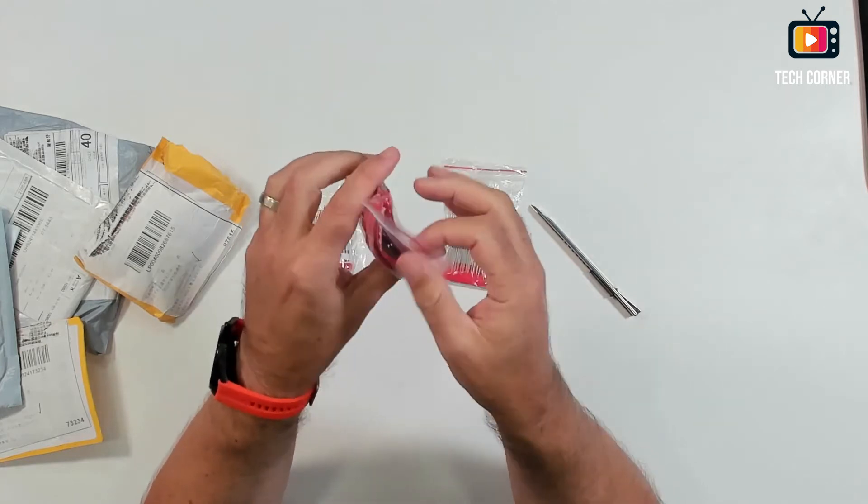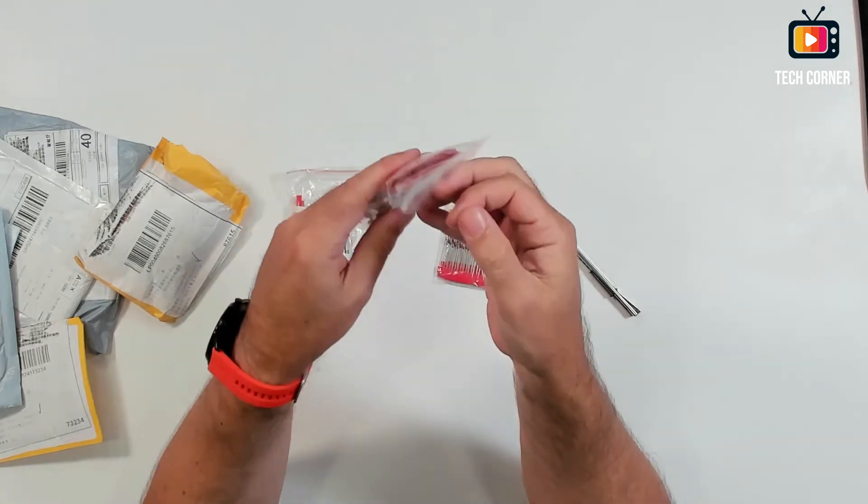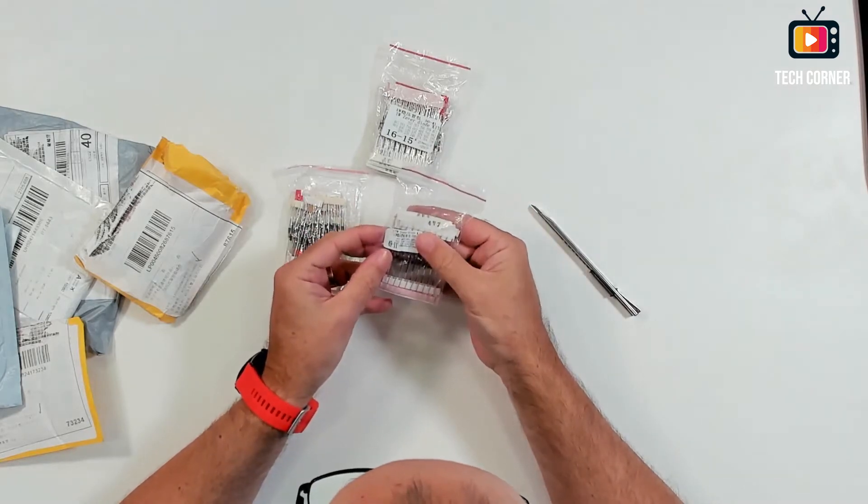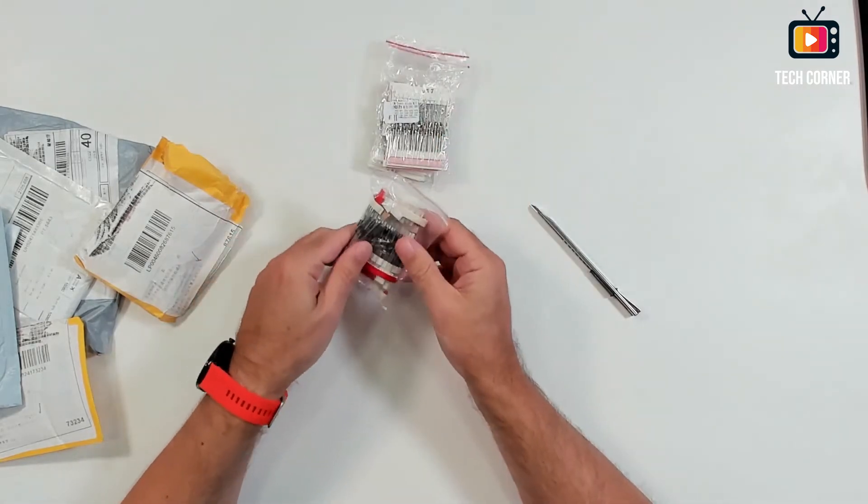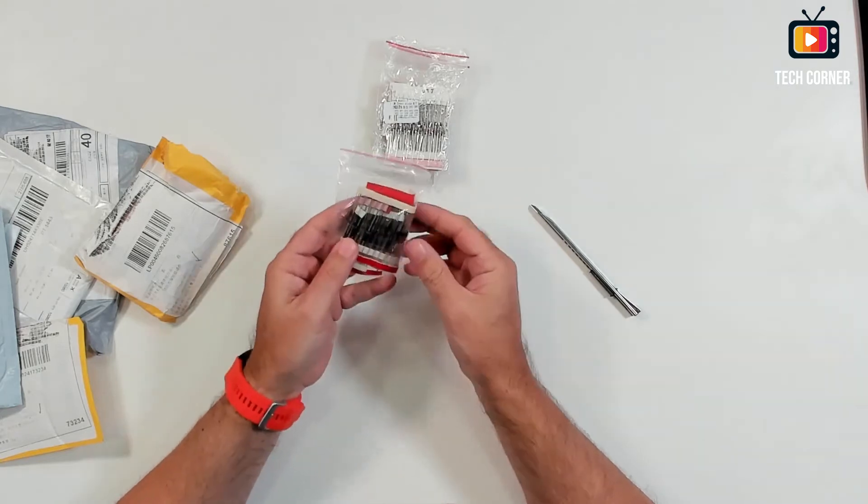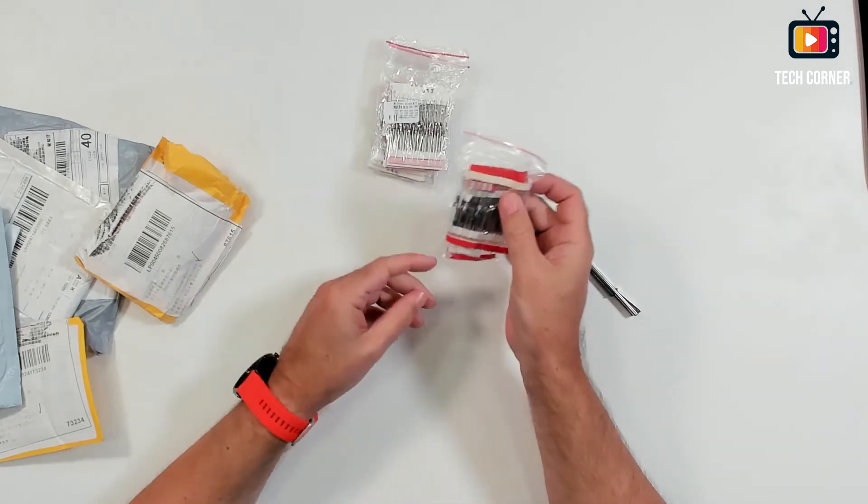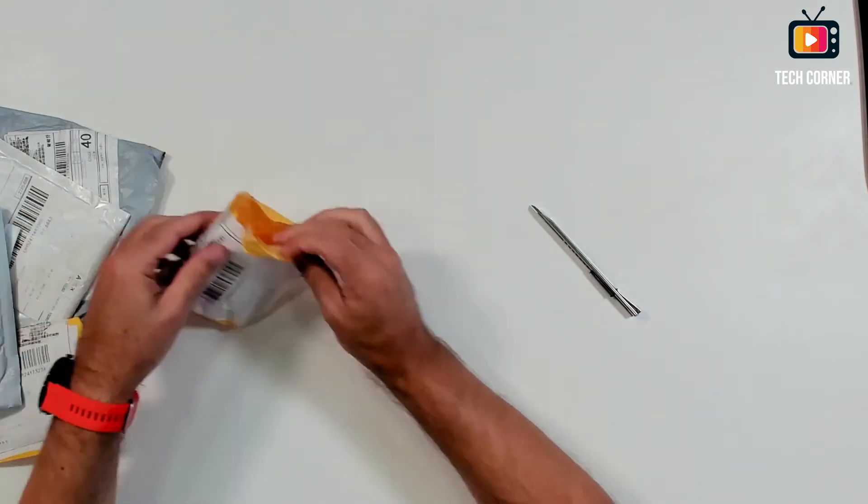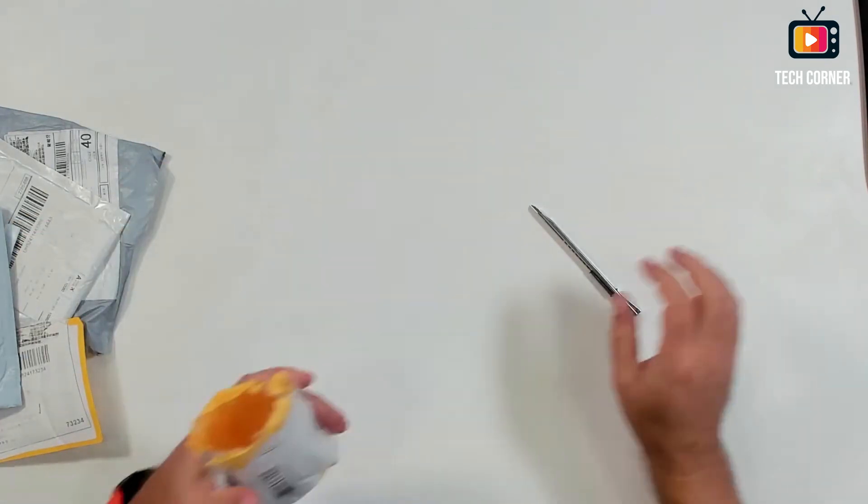I have an assortment of the zener diodes here and it continues in this one. And I have also a few of them here. Okay, components for the projects. I think I don't have anything more. Let's move on.